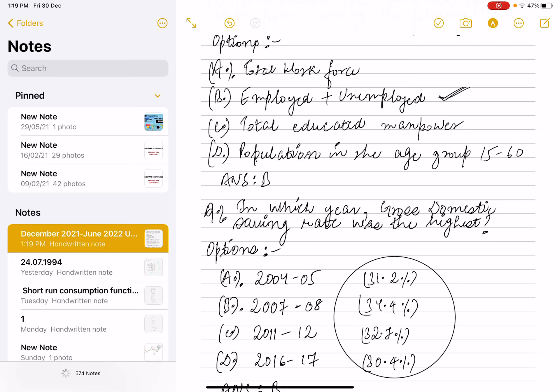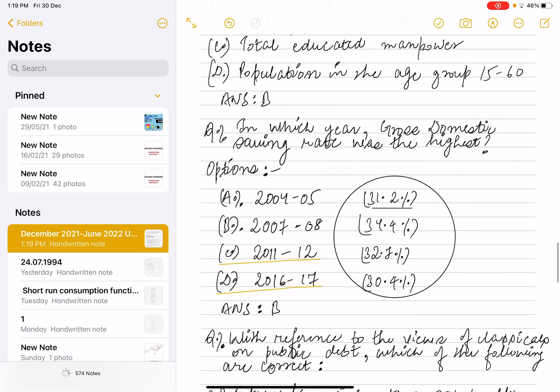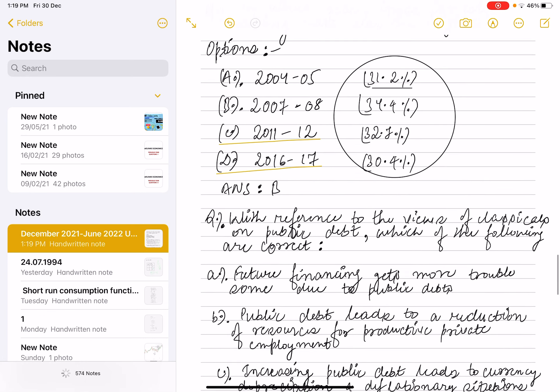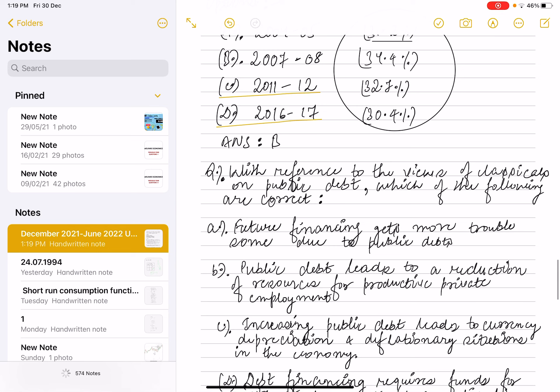In 2004-05, saving rate was 31.2 percent. In 2007-08, the rate was 34.4 percent. In 2011-12, the rate was 32.7 percent. In 2016-17, the rate was 30.4 percent. So the highest was 34.4 percent, which is in year 2007-08. So option B is the correct option.